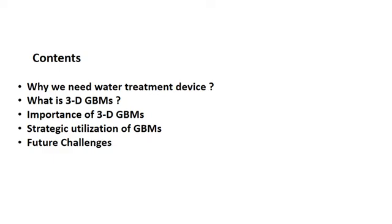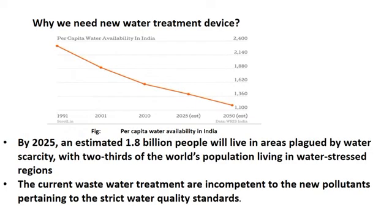Why do we need water treatment devices? As you all know, by 2025 an estimated 1.8 billion people will live in areas plagued by water scarcity, which means two-thirds of the world's population will live in water-stressed regions. The current wastewater treatment methods are incompetent to address new pollutants pertaining to strict water quality standards.